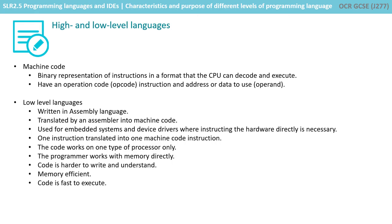So here's a quick recap. Machine code is the binary representation of instructions in a format the CPU can decode and execute. We have an operation code — an opcode instruction — and an address or data to use, called the operand.